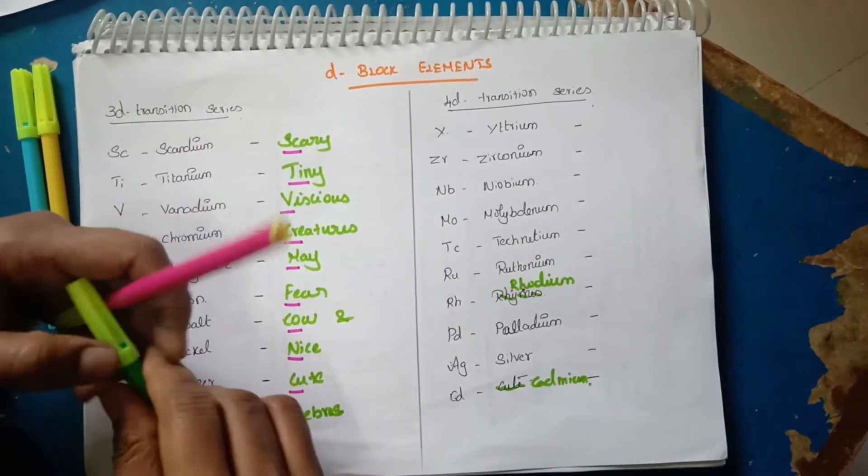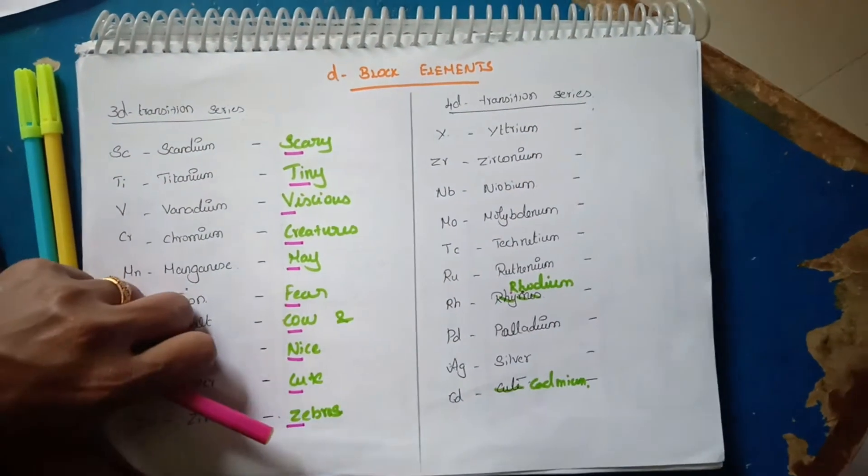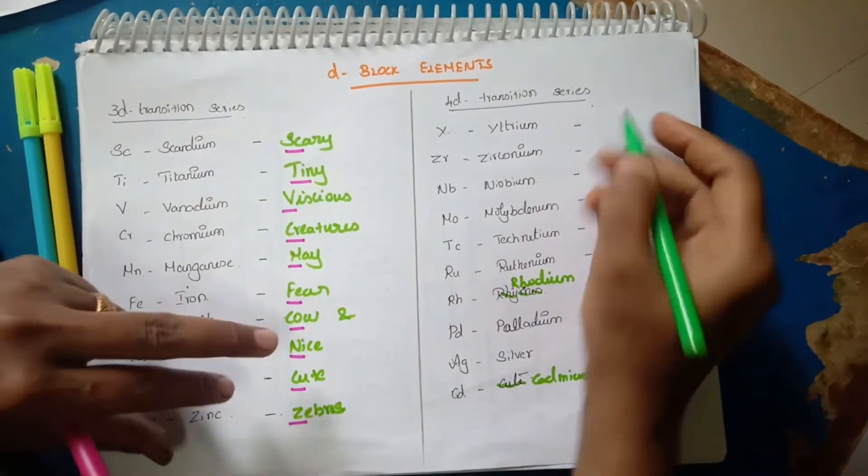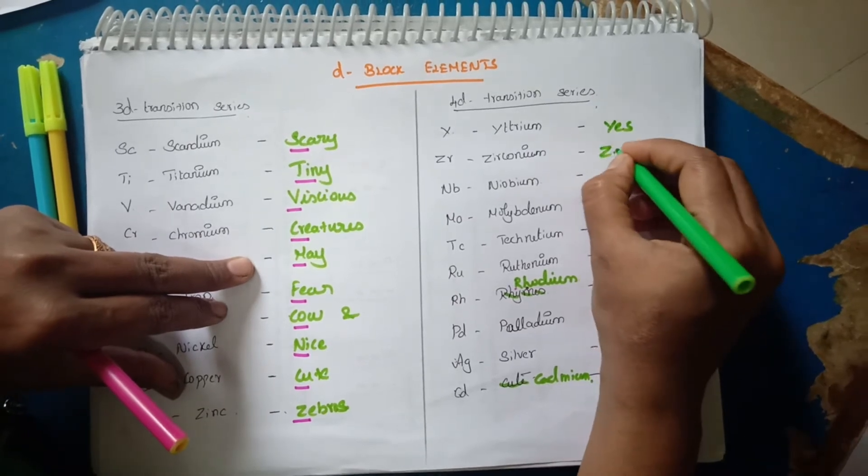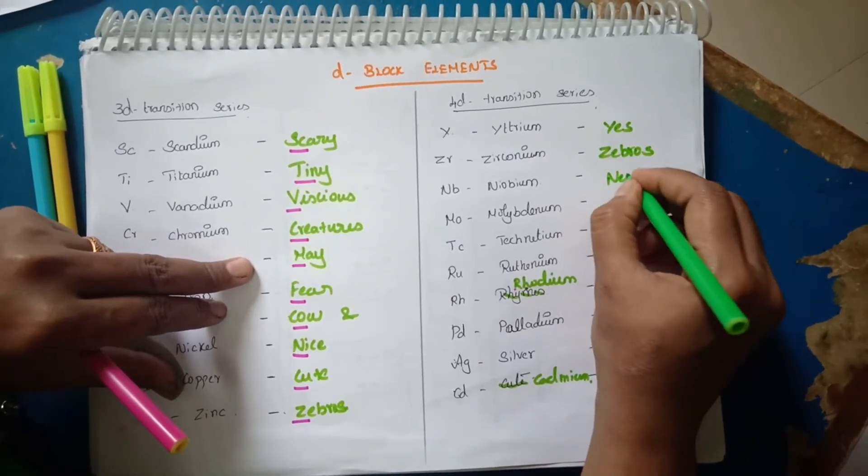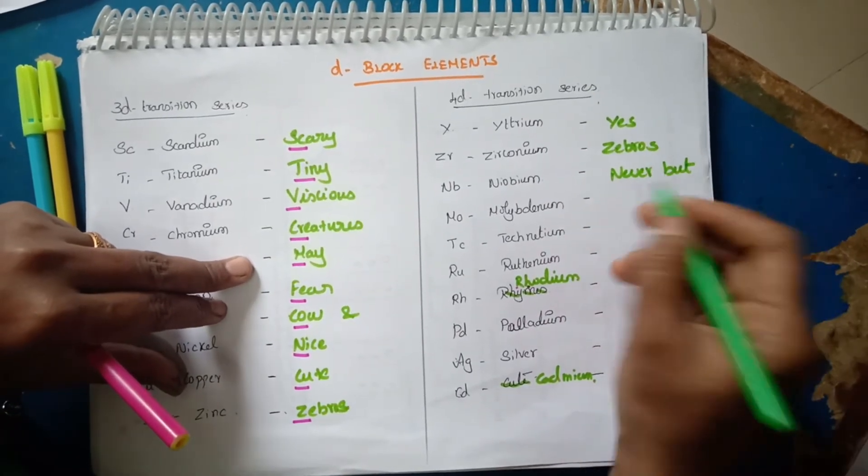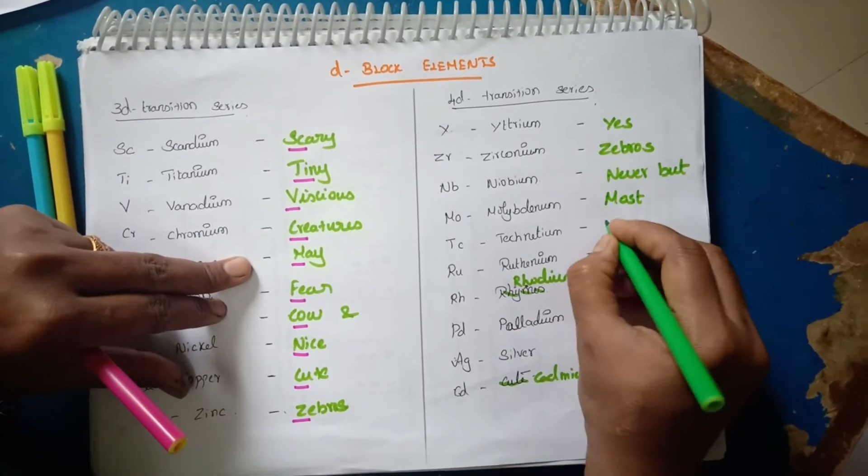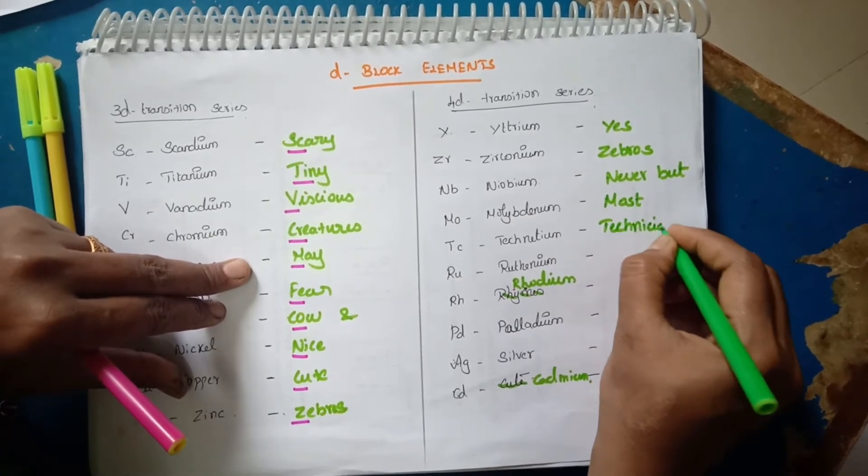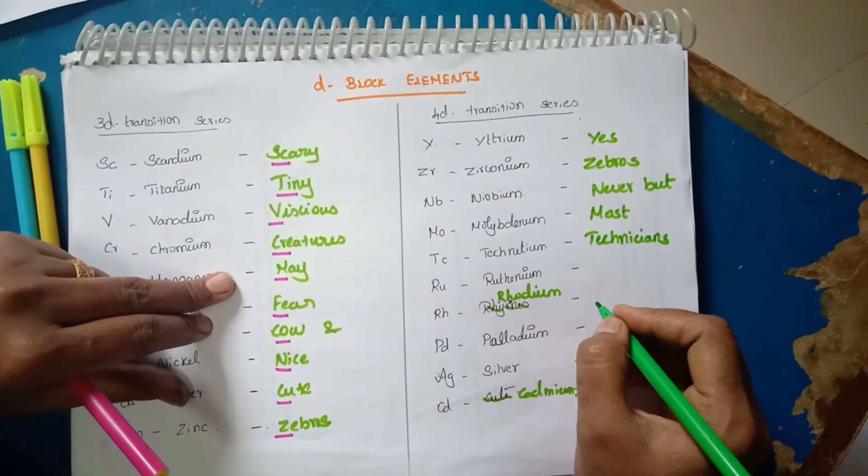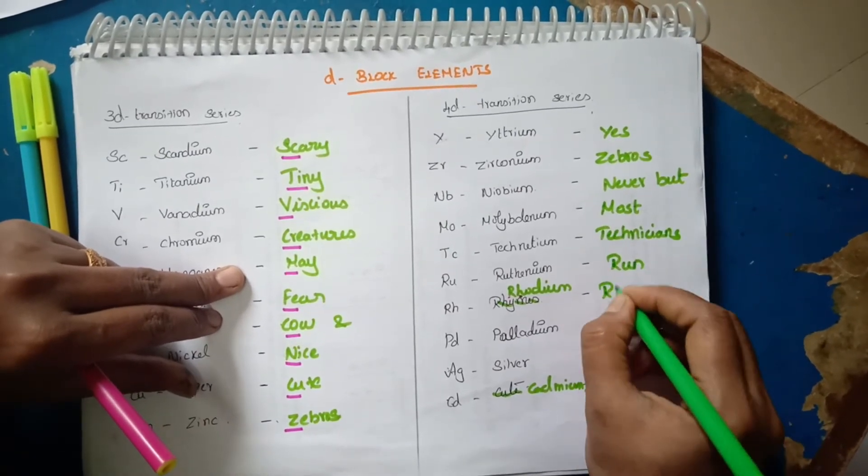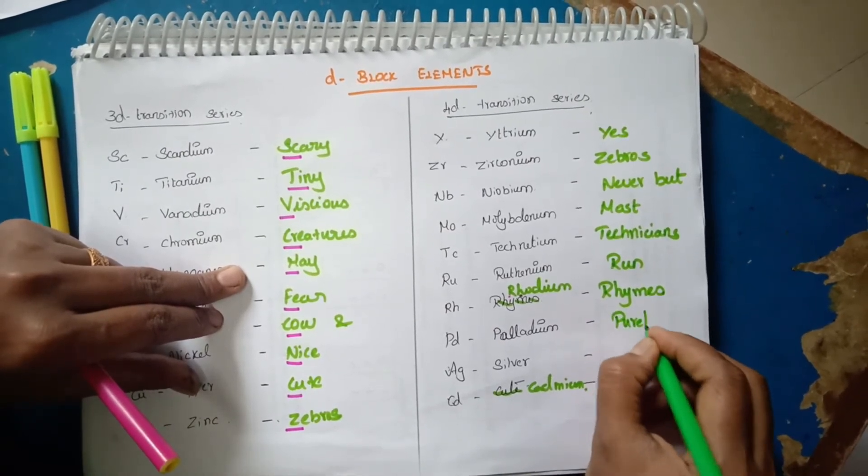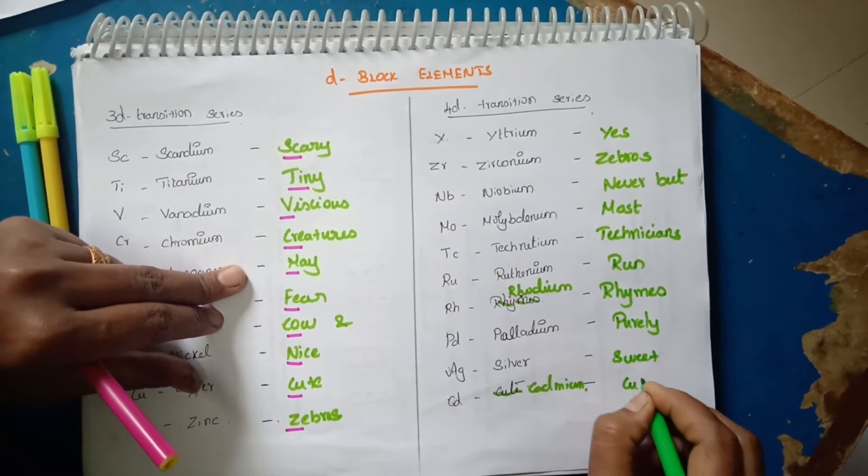Next step, we are going for the 4D transition series. In the 4D transition series, there are 10 elements. The story is: Yes, Zebras never, but here Zebras is considered as a brand, different companies. Never but most technicians run rhymes purely sweet and cute.